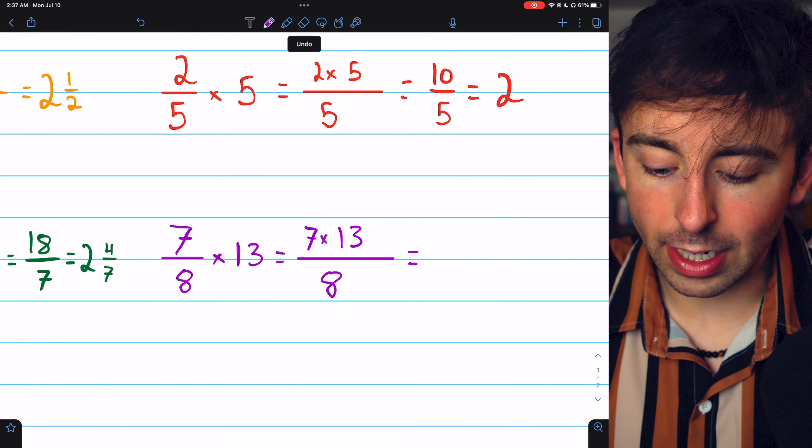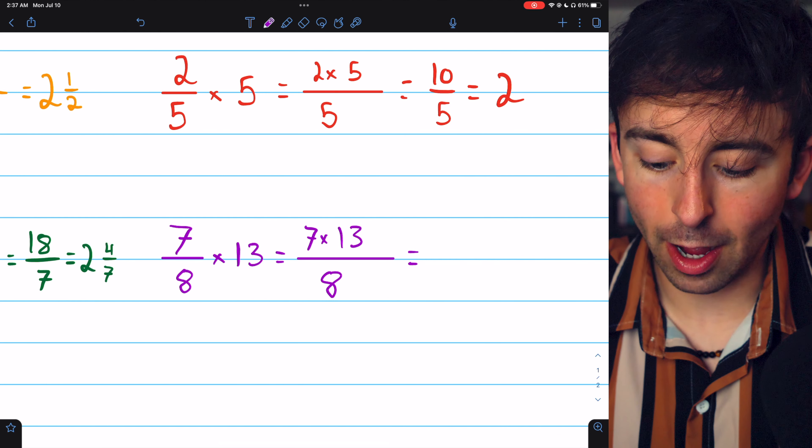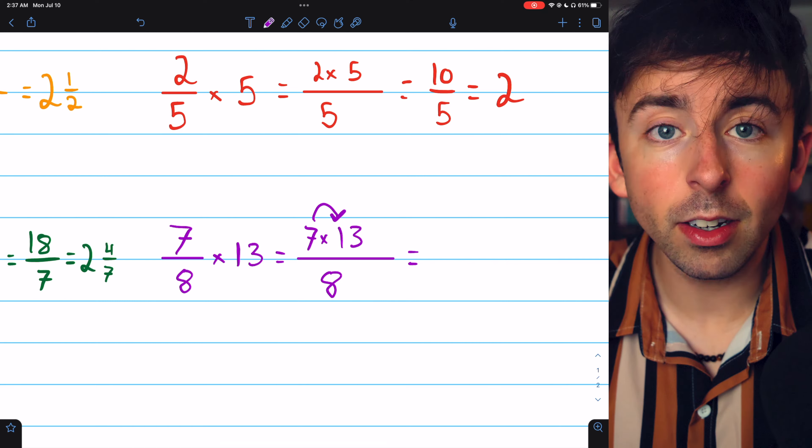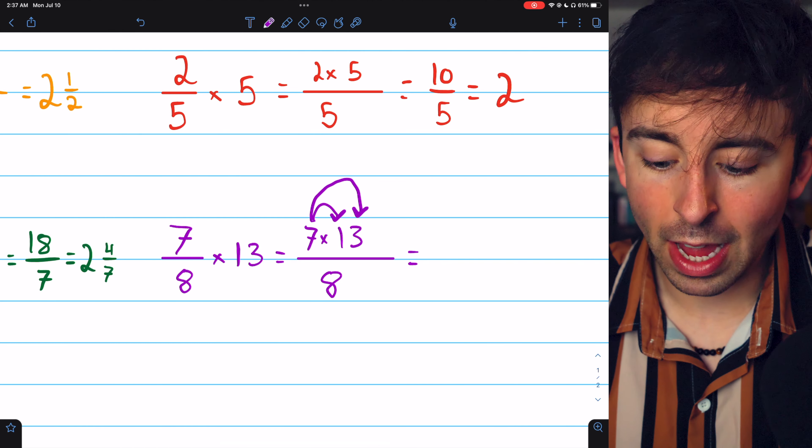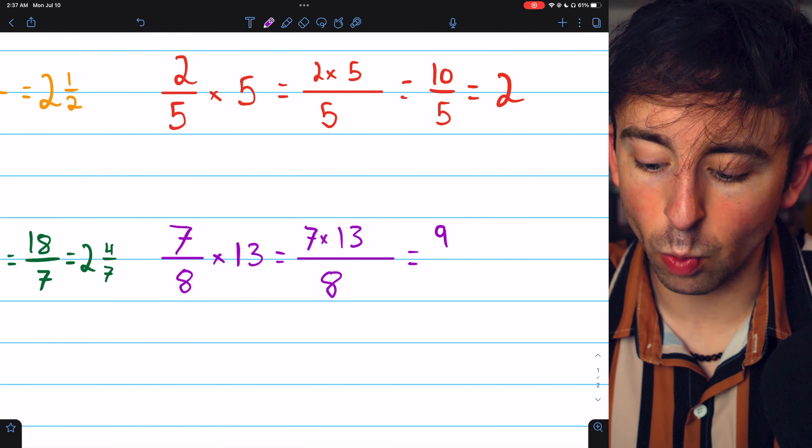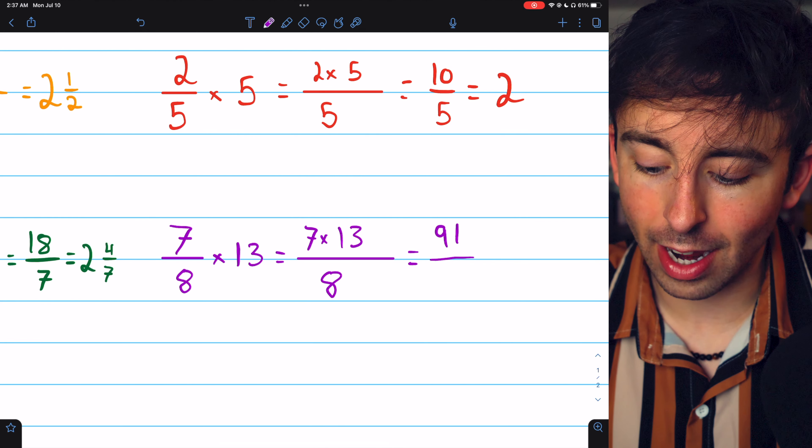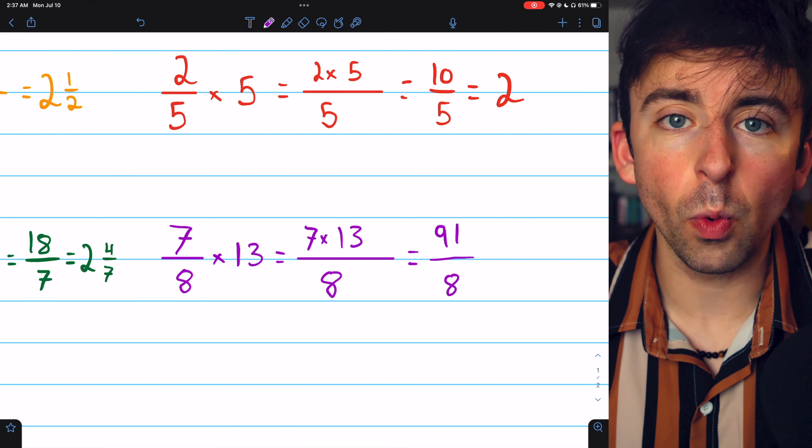7 times 13 isn't too difficult. Just break it up. We have 7 times 10, which is 70, and 7 times 3, which is 21. Those add to 91. 7 times 13 is 91, so this is 91 eighths.